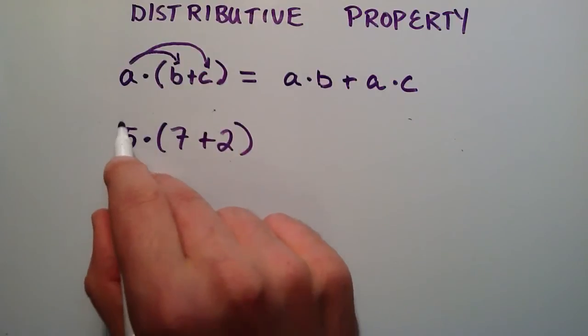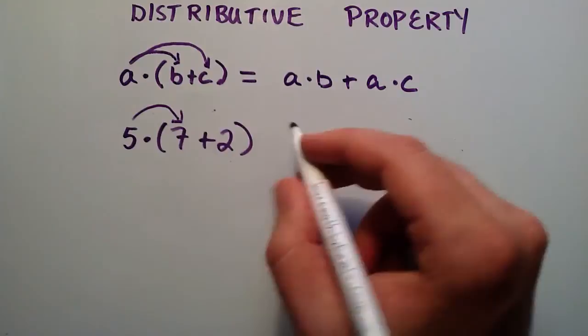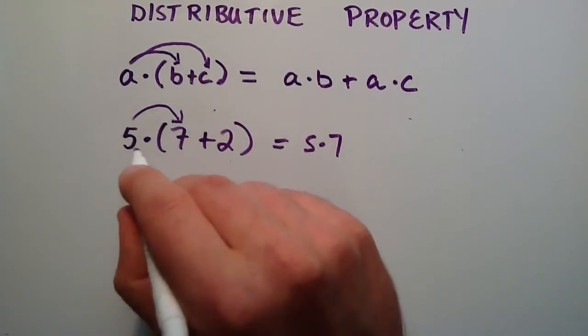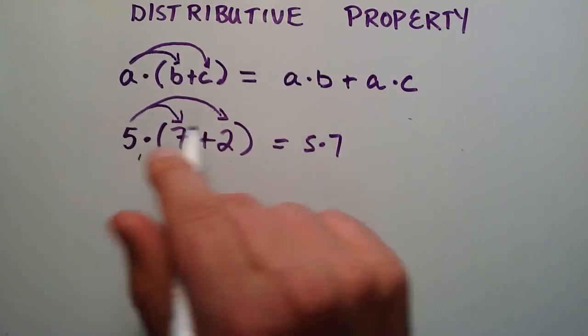So this is going to be 5 times 7, distributing the 5 into the 7. So 5 times 7, and this is going to be 5 distributed into the 2. 5 times 2.